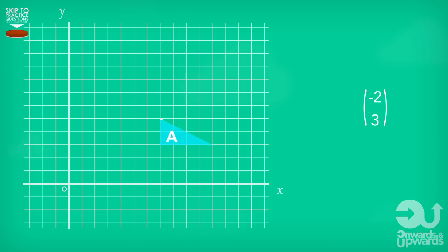First we look at the top number to see how far left or right the shape needs to move. Then we look at the bottom number to see how far up or down the shape needs to move. So in this case, we move two across to the left, and then we move three up. And that's where we move our starting point to.